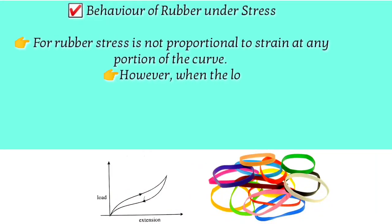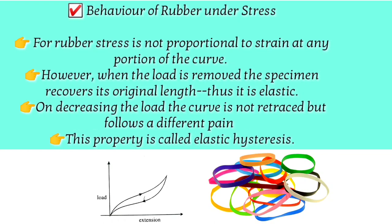Next is the behavior of rubber under stress. For rubber, the stress-strain curve is not straight. When you apply stress to rubber, the strain produced is very large. However, when you remove the load, the rubber returns to its original shape but does not retrace the same path on the graph — it forms a loop. This phenomenon is called elastic hysteresis. When you stretch rubber, work is stored as elastic potential energy, but a large portion is lost as heat, which is why the loading and unloading paths are different — this energy loss is the elastic hysteresis loss.